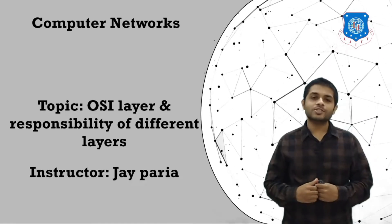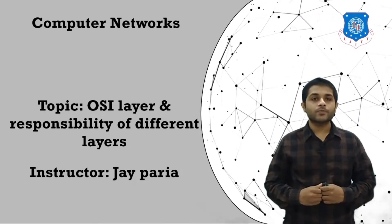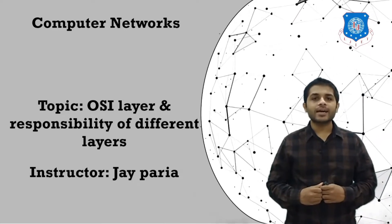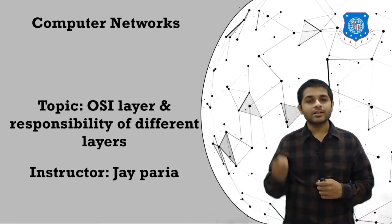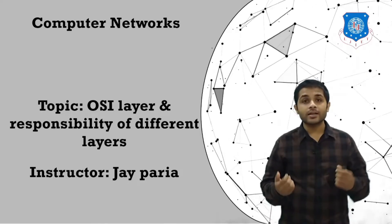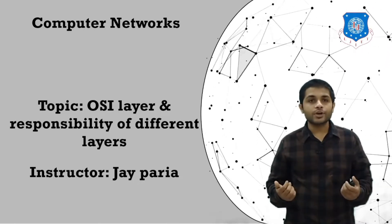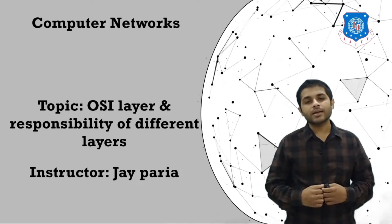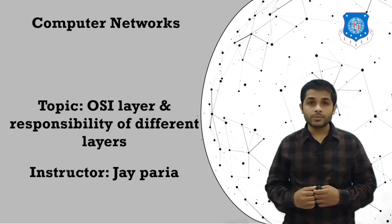Hello everyone, this is Joy, your tutor for computer networks. In the last session we discussed what is computer networks and its different types. We saw that networks can be categorized into three types based on size, based on structure, and based on type of individual device. Based on size we saw LAN, MAN, and WAN. Based on structure we saw different topologies, and based on type of individual device we saw client-server network and peer-to-peer network.